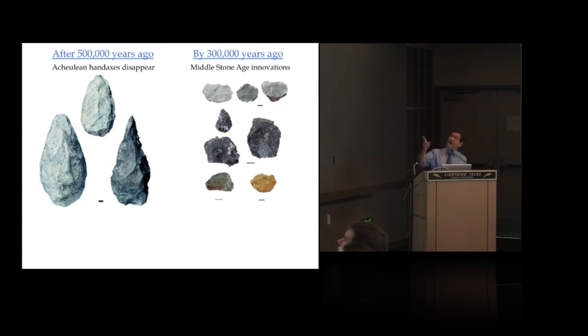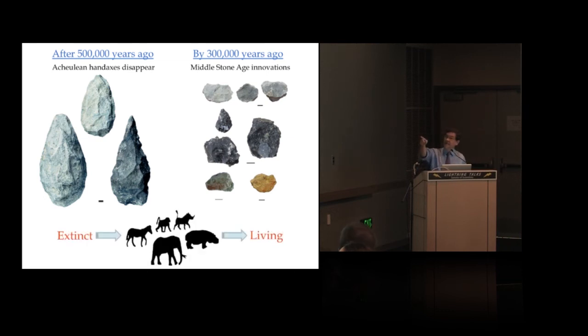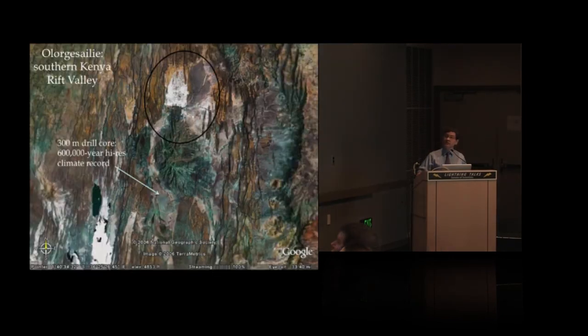The last 356,000 years. We go back to Olorgesailie. By 300,000 years ago, you see the demise of hand axes and the origin of the human capacity to innovate. We also see during that time a major transition in the fauna of East Africa. Wouldn't it be cool if we could find a high-precision environmental record from the site where this occurs? And in fact, that's what we intend to do starting in September: a drill core that will recover 600,000 years of high-resolution climate that will probably determine my research career for the next few years. Thanks very much.